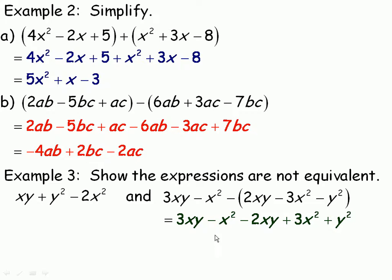We'll collect the like terms. 3xy minus 2xy is xy. So we do get exactly the same term as here. Negative x squared plus 3x squared is 2x squared. So notice it's the opposite sign from this.